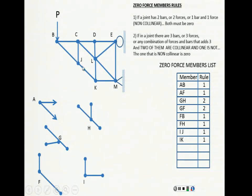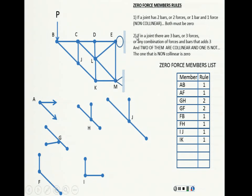When I do that, look how obvious this one becomes. Three bars, two of them collinear, one is not — that means rule number two. That means JZ is zero. This is rule number two, and I erase it from the drawing.